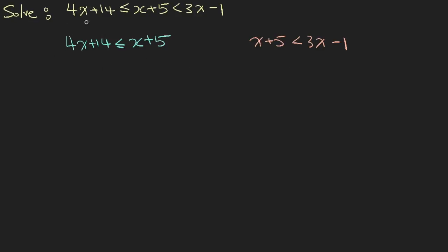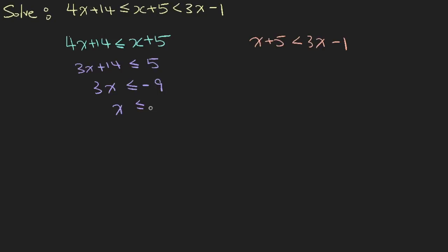So let's look at the first equation. We want to bring the x to the left-hand side, so we minus x on both sides. You will have 3x plus 14, less than or equals to 5. Now we want to shift 14 to the other side, so we minus 14 on both sides. You will have 3x less than or equals to minus 9, so x is less than or equals to minus 3.